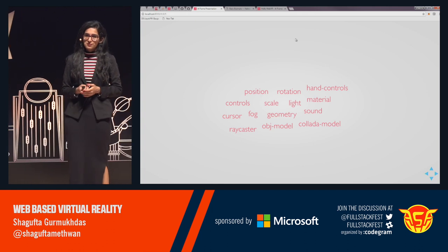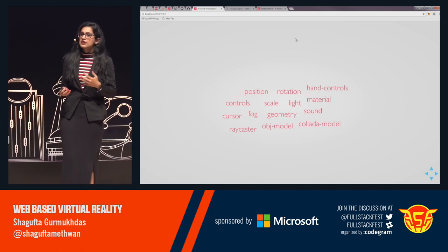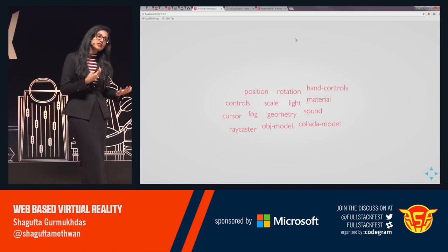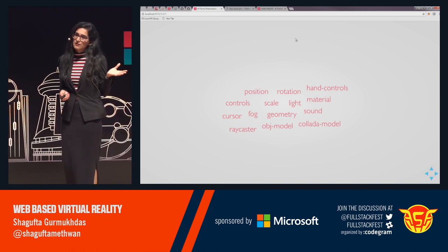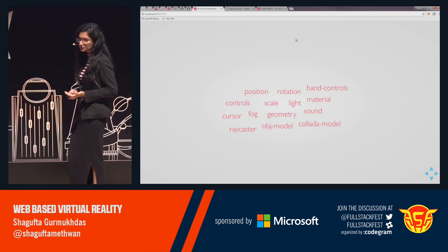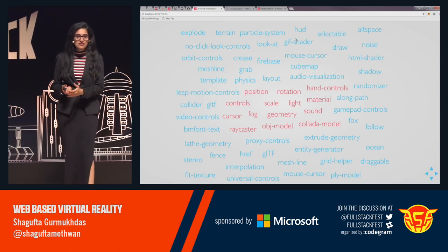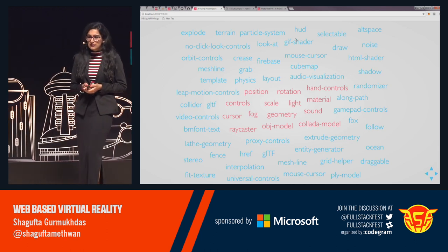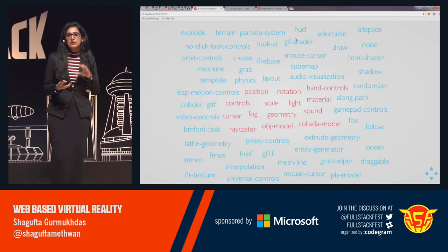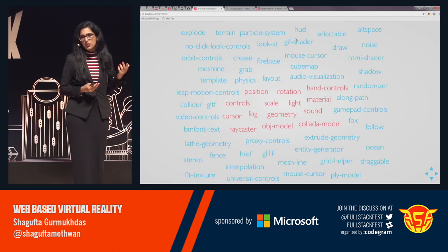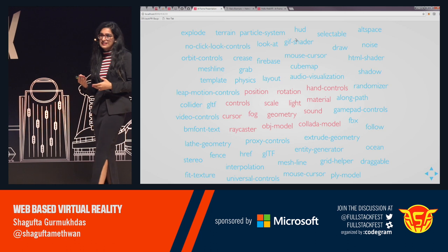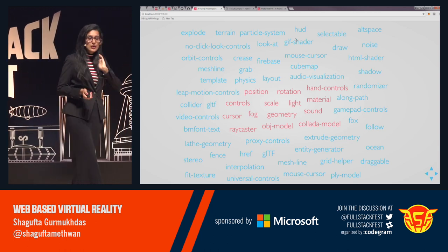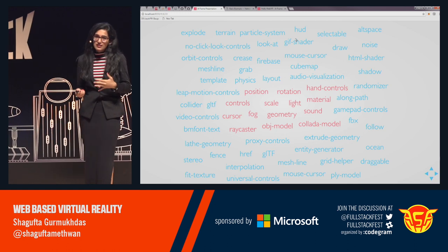These are the components that ship in A-Frame out of the box, provided by default. A-Frame has a huge community and they've been building a lot of components. These are advanced developers who have built tons of components — you name it, you have it. These components have full access to JavaScript and the DOM APIs. You have networked A-Frame for building multi-user applications, particle systems, oceans, sound, audio visualizations, and many more ready-made components.